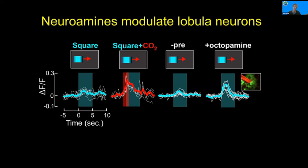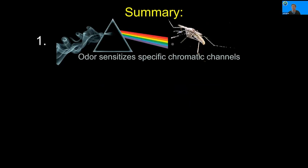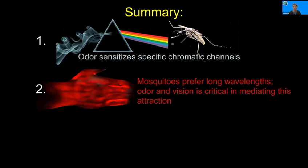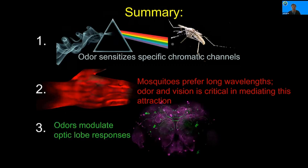When we present a lobula neuron with odor, you get a really robust response. If you microinject octopamine into that region, octopamine can actually recapitulate those odor-evoked responses in the visual system. We also did the same experiments on the antennal lobe and found that the antennal lobe is not modulated by visual responses — any sort of visual input doesn't really change odor information encoding. So the odor is modulating the visual system. To summarize: odor really sensitizes very specific chromatic channels — as soon as they smell something, they will go to the visual object, specifically cyan, red, orange, and black. Mosquitoes prefer long wavelengths associated with those dominating human skin reflectance, and odor and vision are both critical for mediating this attraction. Odors modulate the optic lobe responses, likely through octopaminergic neurons.